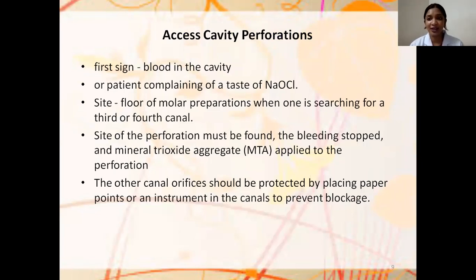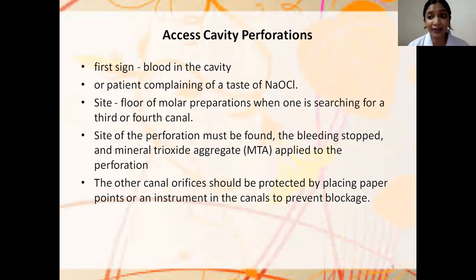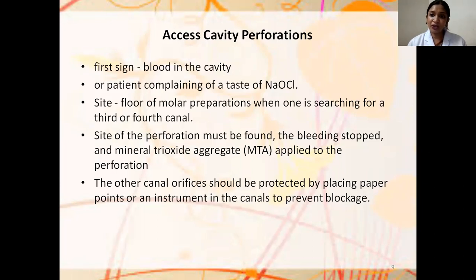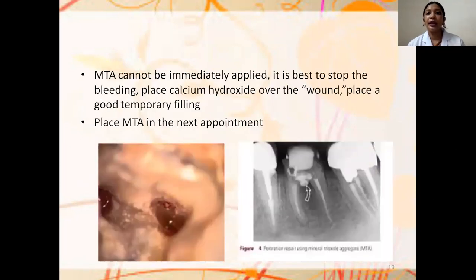Access cavity perforations — the first sign is bleeding, and the patient might feel pain; sometimes the patient may taste sodium hypochlorite in the mouth. These perforations typically occur while searching for a third or fourth accessory canal. Once bleeding is controlled, mineral trioxide aggregate (MTA) can be placed at the site of perforation. Blocking other orifices with instruments or paper points is important. MTA cannot be immediately applied if there is fresh bleeding — you can apply calcium hydroxide first, and once bleeding stops, give a calcium hydroxide temporary filling.